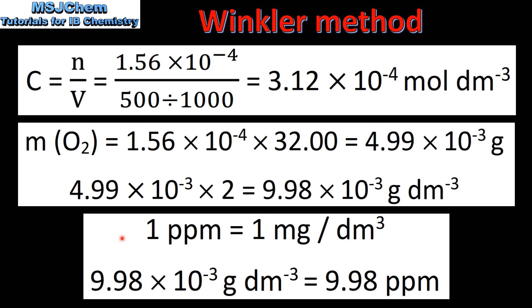Finally we will calculate the concentration of dissolved oxygen in parts per million. 1 ppm is equal to 1 milligram per decimeter cubed. Therefore 9.98 times 10 to the negative 3 grams per decimeter³ is equal to 9.98 parts per million.